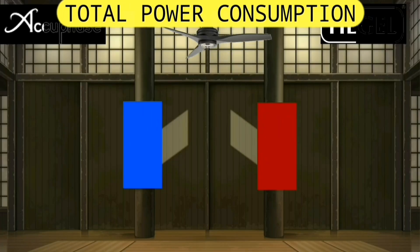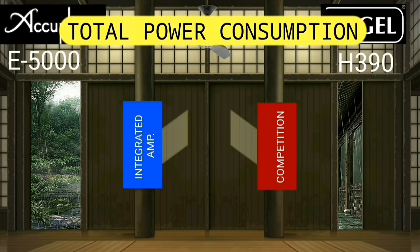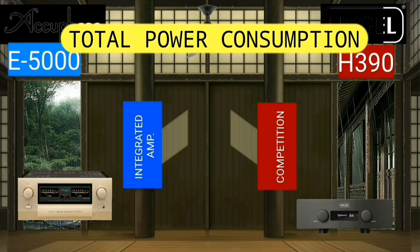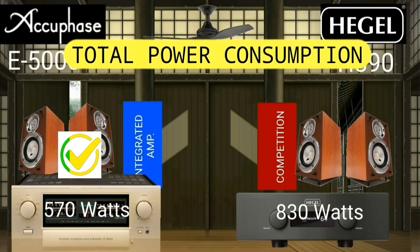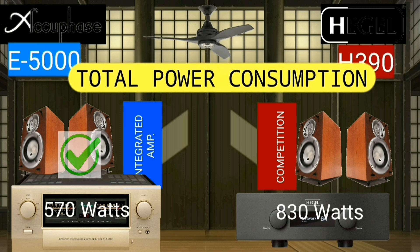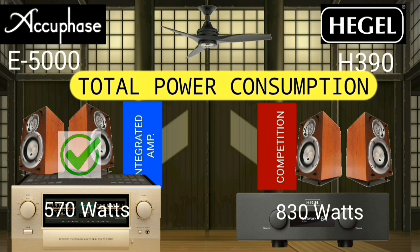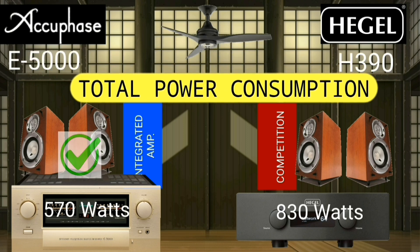Total system power is a term often used in audio electronics to rate the power of an audio system. Total system power refers to the total power consumed by the unit.